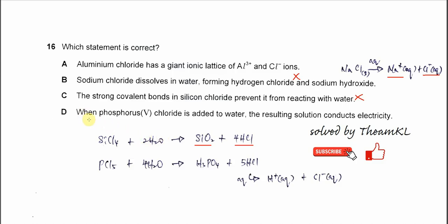So D, when phosphorus pentachloride is added to water, the resulting solution conducts electricity. So this is true. When phosphorus chloride dissolves in water, it will form two acids: phosphoric acid and HCl.